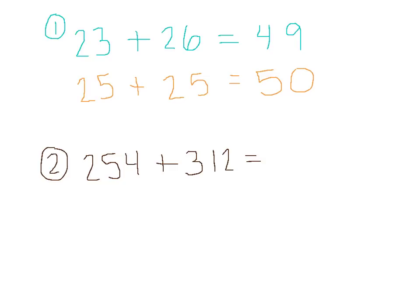And then the next one, we have 254 plus 312. And I'll go ahead and use orange again. So 254, I really want to just bump up to 255. I could see that. Absolutely. Get to that closest five.